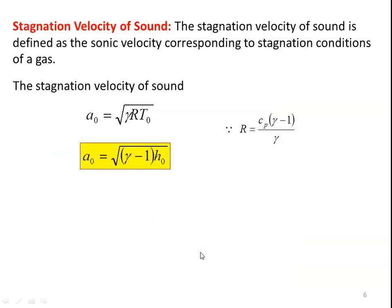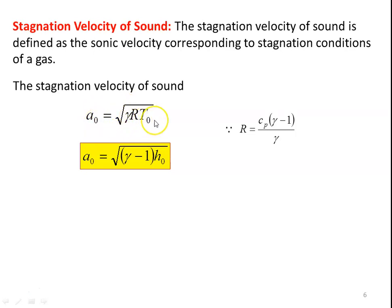Stagnation velocity of sound is defined as the sonic velocity corresponding to the stagnation condition — that is, the value of A at the stagnation temperature. Since A = √(γRT), the stagnation acoustic velocity A0 = √(γRT0). Substituting R = Cp·(γ-1)/γ, we get Cp·T = H0, and A0 = √((γ-1)·H0).